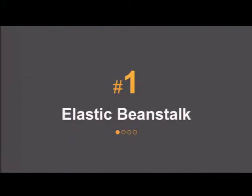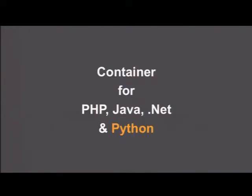So what is Elastic Beanstalk? Elastic Beanstalk is a container that Amazon has, which manages different web services. Originally it launched for Java, and we've added support for PHP and .NET. As of last week, we launched Python support, so any kind of Python application using the WSGI interface can be fully managed with this container service — Elastic Beanstalk.